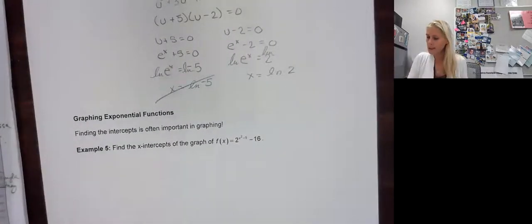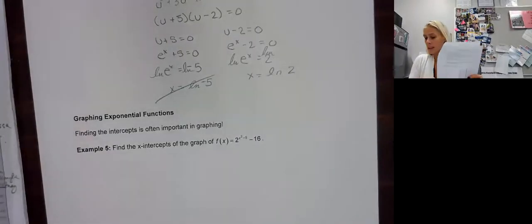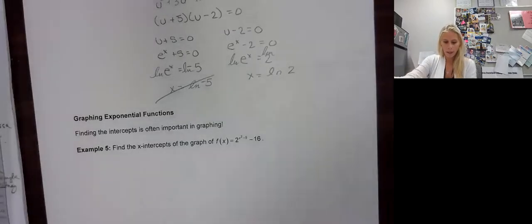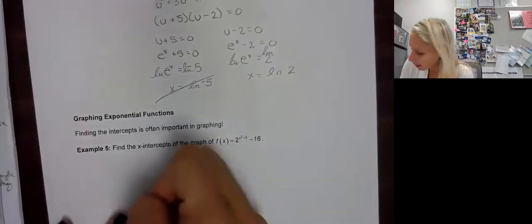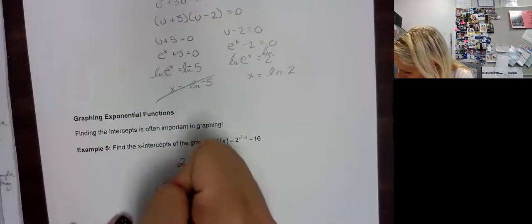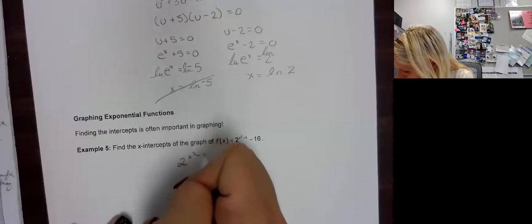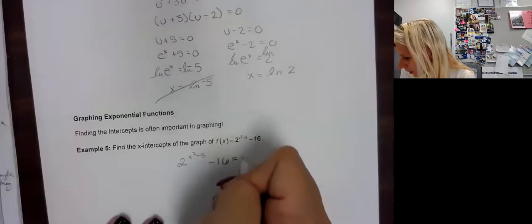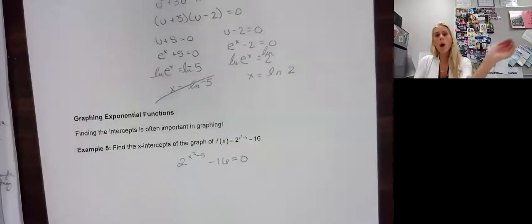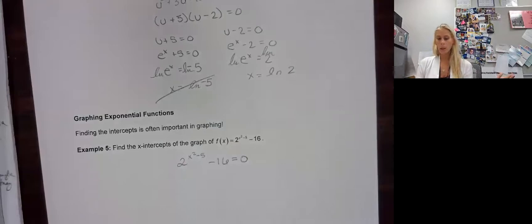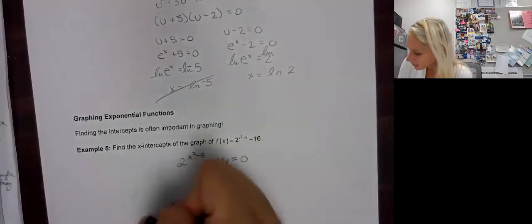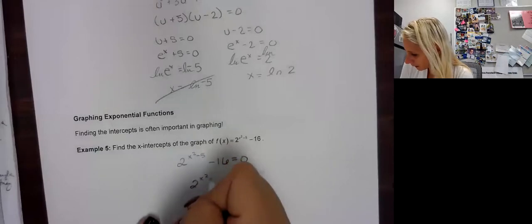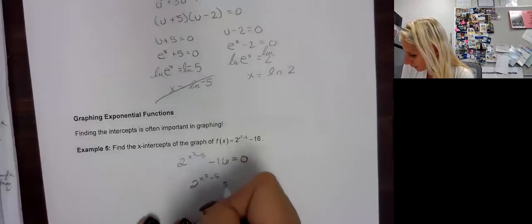Alright, finding the intercepts is often important when graphing. So when finding the x-intercepts of the graph, what we need to do, remember, is we were solving by making the whole equation equal 0. Right, x-intercepts are when f of x or y equals 0. So just set it equal to 0 and solve. So 2 to the x squared minus 5 equals 16.